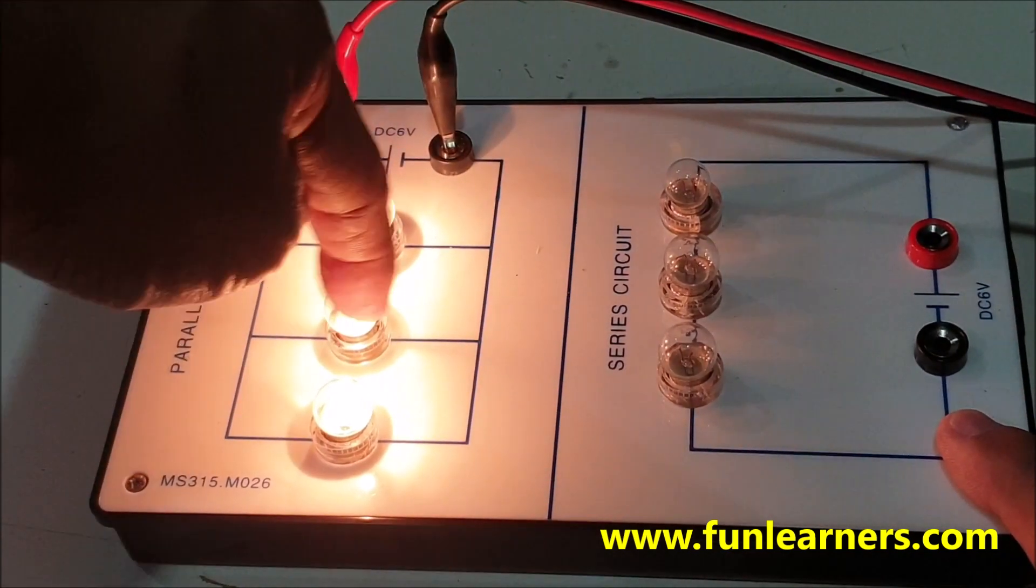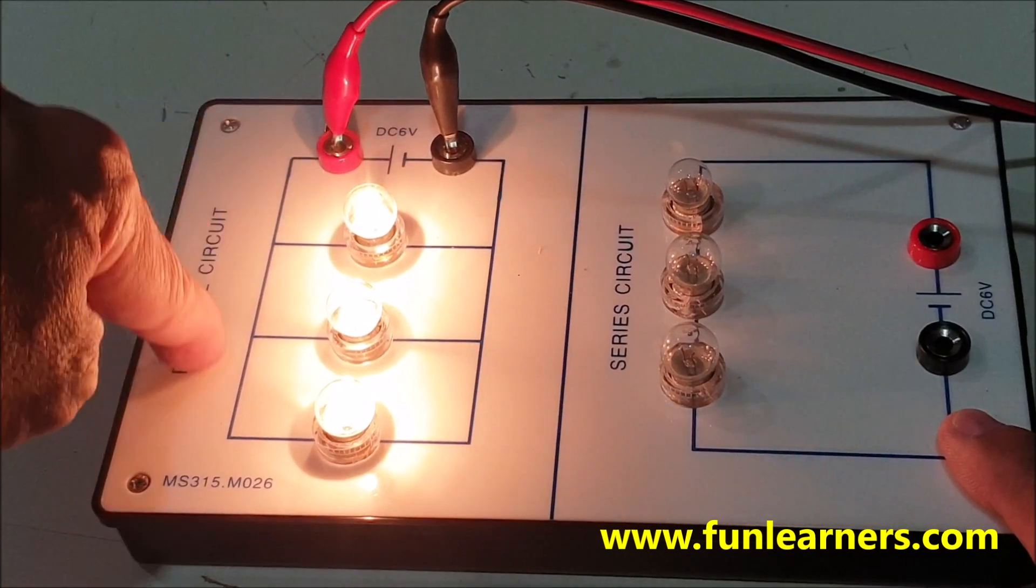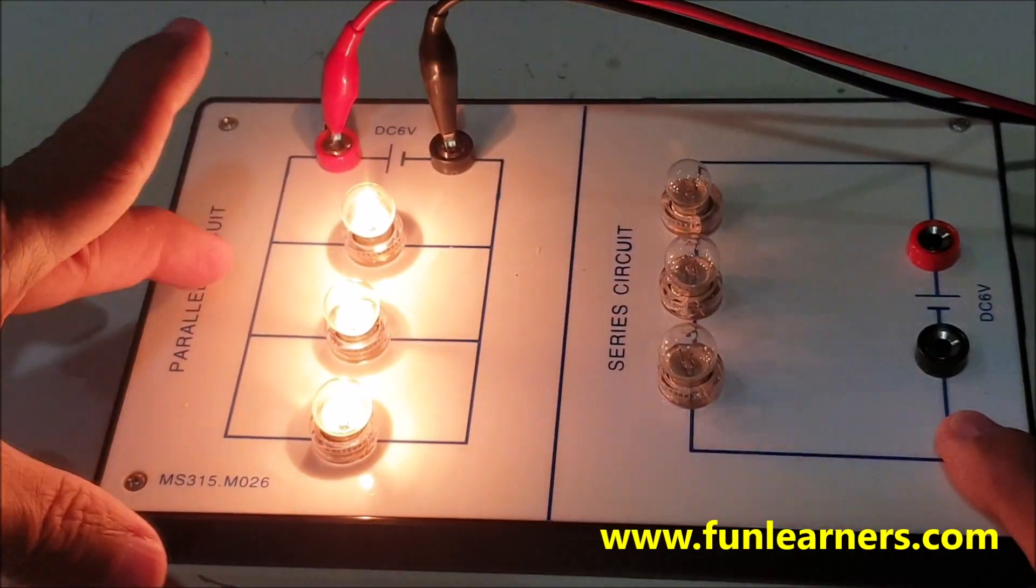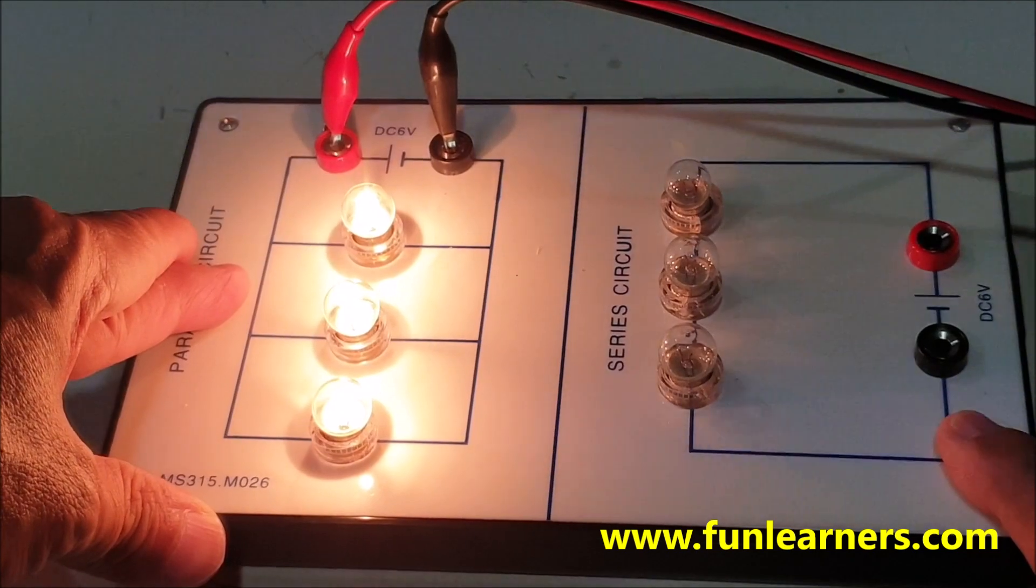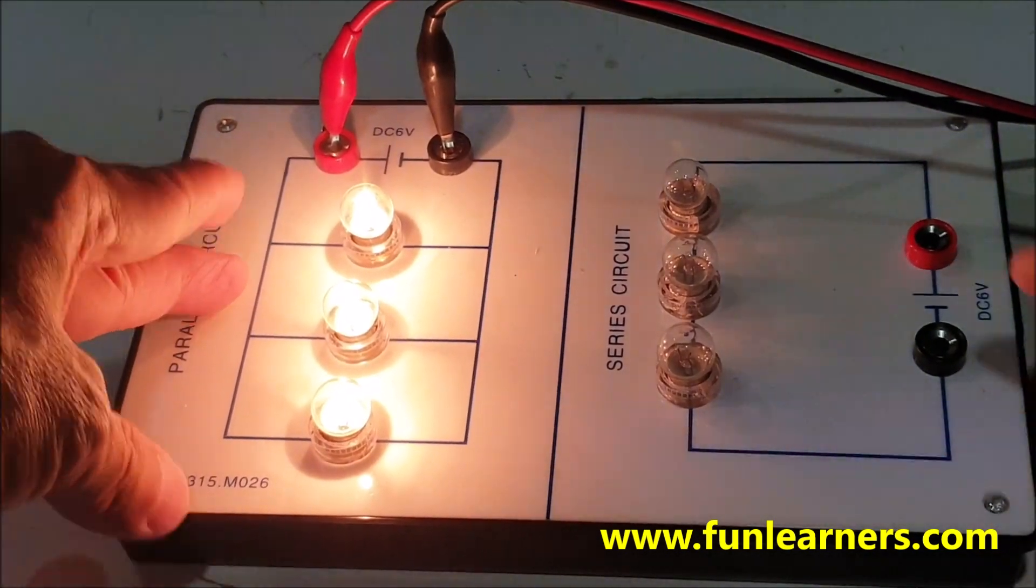will come here, the other one comes here through this path, and the other current will flow through here—three different paths. Now what about the series circuit?